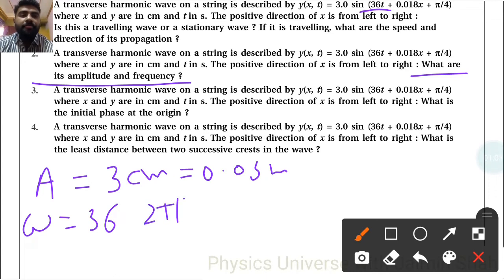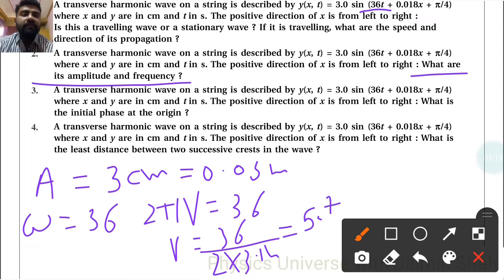So 2π ν is equal to 36. So ν is equal to 36 upon 2 into 3.14 right. So 18 upon 3.14. So frequency is 5.73 hertz.